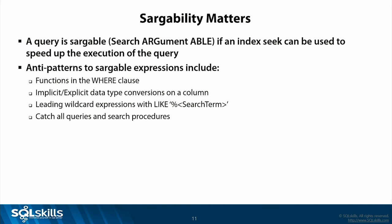A question: if you have a function in the WHERE clause, does it impact parallelism? If you have a function in the statement at all, parallelism is inhibited — it's a parallel inhibitor. If you look at the execution plan, it will say 'Non-parallel plan reason' with 'user defined function' listed there. Sargability is where we have a search-argument-able expression that allows an index seek to occur as part of speeding up query execution. Semantic patterns: functions in the WHERE clause, and implicit or explicit data type conversions on a column.